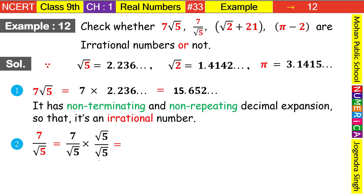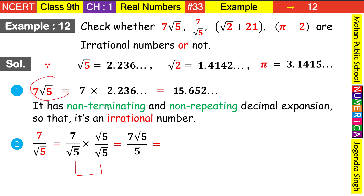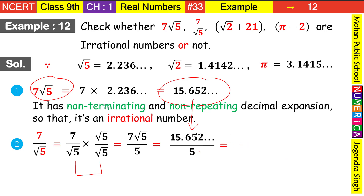If we multiply numerator and denominator both by √5, the value of our number stays the same. In the denominator, √5 × √5 = 5, so the root is eliminated. The numerator becomes 7√5. So our result is 7√5/5. We already calculated 7√5 = 15.652..., so we carry that value here.